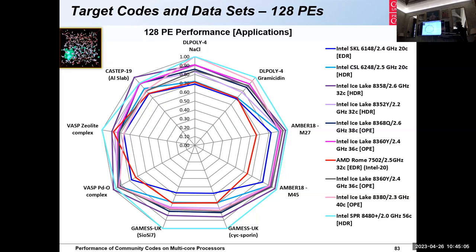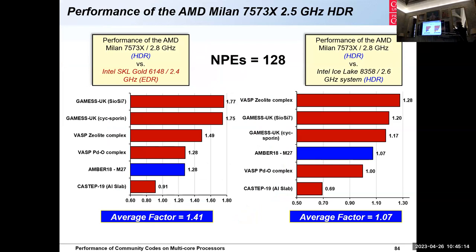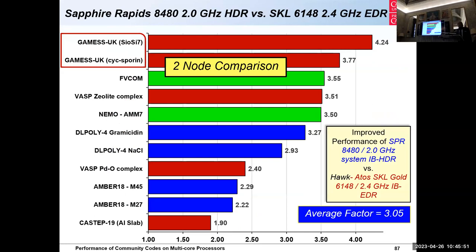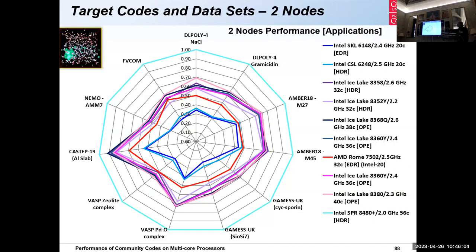There are examples where comparing the Milan 7573X to Ice Lake systems shows it actually outperforming those systems at 256 cores. Similar conclusion. If you look at the perimeter of the Kiviat diagram, in most cases — with the exception of CASTEP, rationalized by the MPI_Alltoallv issue — Sapphire Rapids is the most performant system. Moving to node-to-node: Sapphire Rapids node performance is significantly better, and in the Kiviat diagram it's really obvious — way ahead of everything else except for CASTEP.